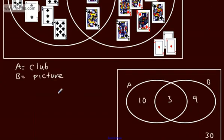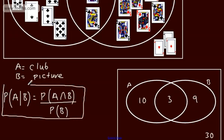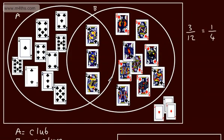This gives rise to the multiplication rule. The multiplication rule states: the probability of A given B is equal to the probability of A intersection B divided by the probability of B. This can also be written the other way round: the probability of B given A is equal to the probability of B intersection A divided by the probability of A. This is saying: what is the probability that I get A, given B has already happened?